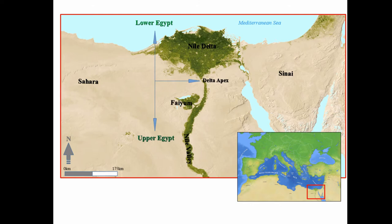The Nile Delta is one of the world's largest river deltas, covering an area of about 22,000 square kilometers, spanning from what is called the Delta Apex, the end of the Valley Conduit, around 160 kilometers to its long fan-shaped coastline of 225 kilometers in the Mediterranean Sea.